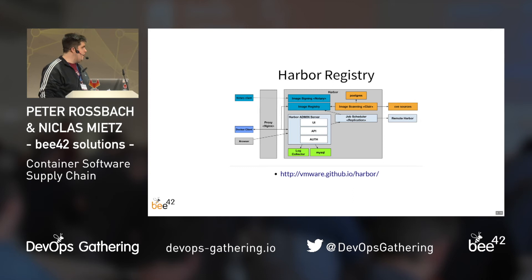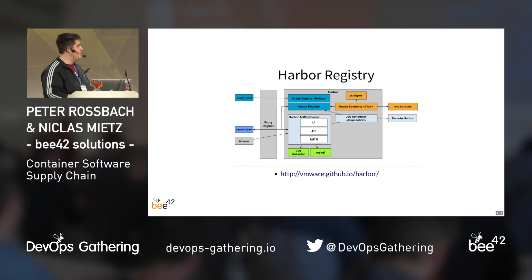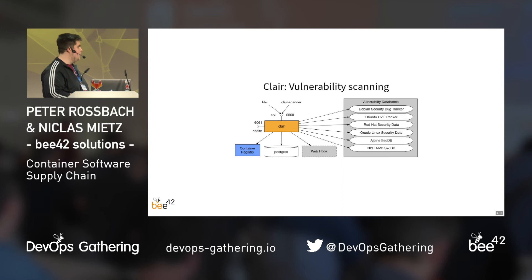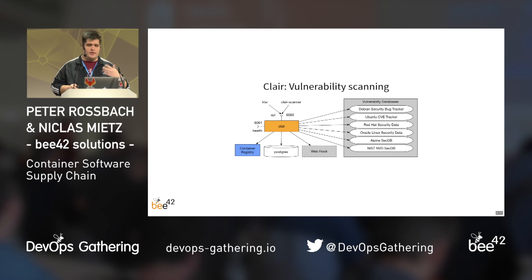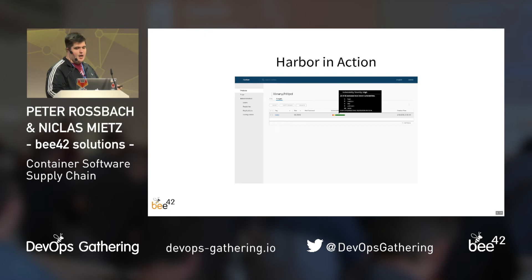The Harbor registry is a more complex registry. We have the Harbor admin server with the possibility to scan images or use Notary to sign images. With vulnerability scanning, we have Clair. With Clair, we can scan our Docker images against a public vulnerability database. If you want to extend it, Clair provides that possibility as well.